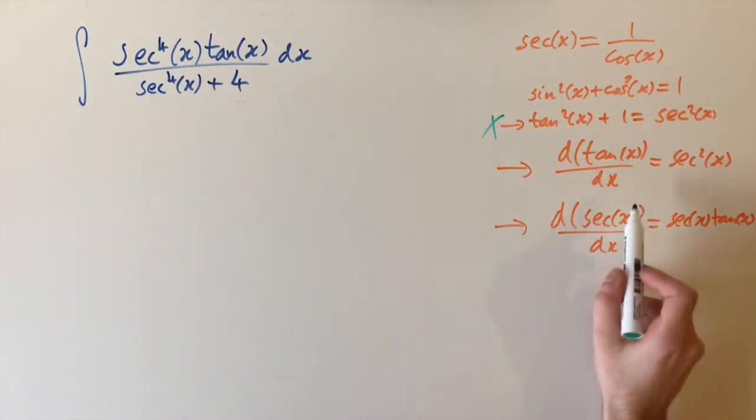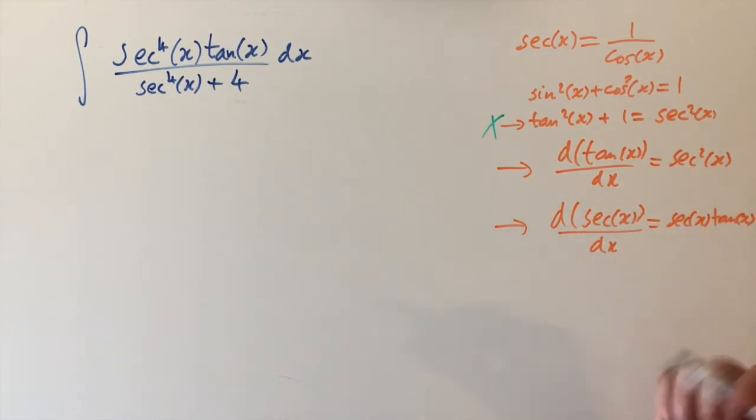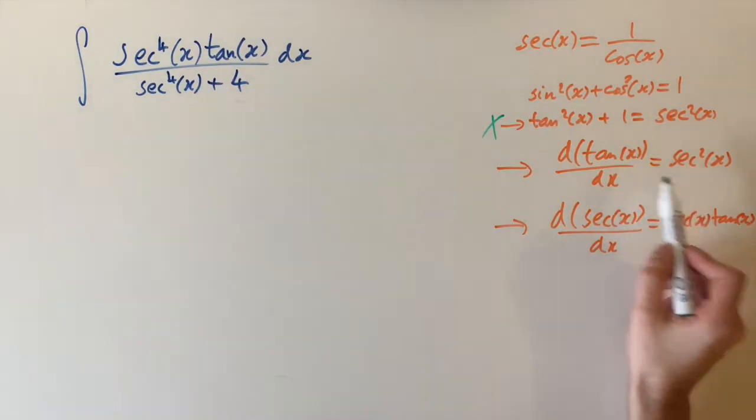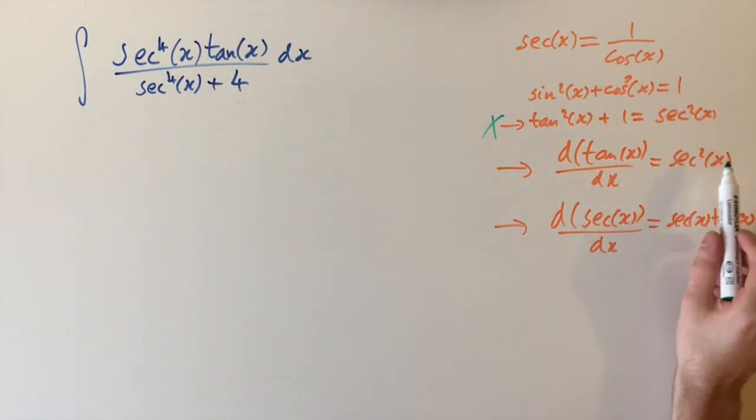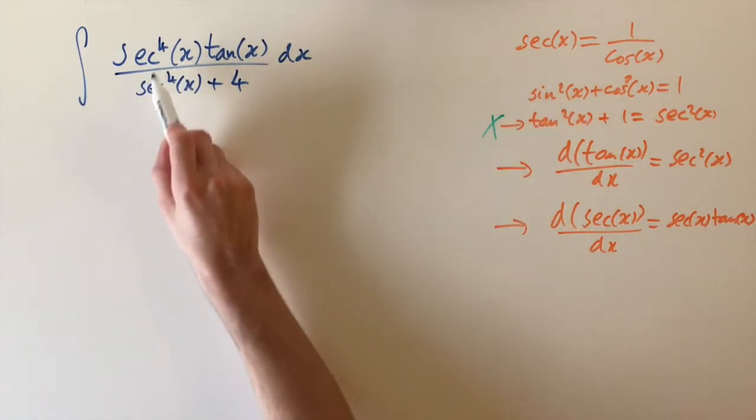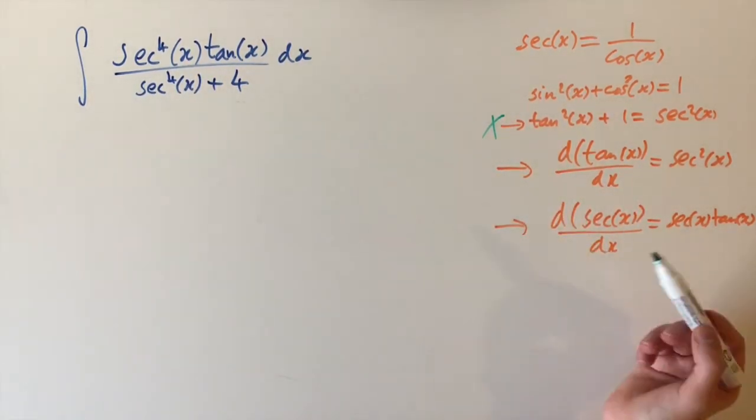Now, if we think about using these two identities, we can use a substitution method. So if we were going to substitute u equals tan of x, then we'd have the derivative of sec squared of x. That might help us, but we have sec to the power of 4 of x, it might still be a bit messy.